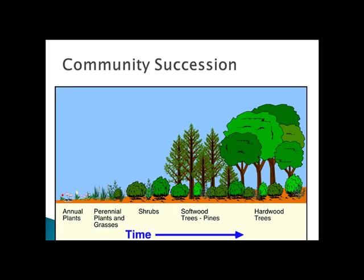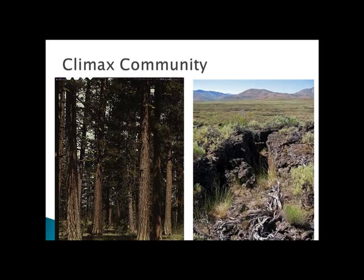Secondary succession is what you see here. If a community is destroyed, it's then recolonized by living organisms. The final process in community succession is the climax community, with stable natural communities with little change. Climax communities in Idaho are most commonly either mixed sagebrush grassland or ponderosa pine forests, depending on where you are in the state.